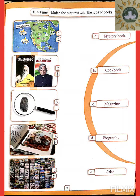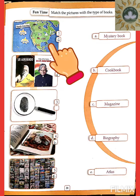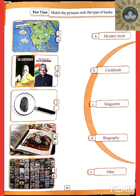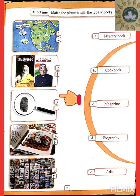Now children, we move on to page number 31, Fun Time — match the pictures with the type of books. The first one on your left hand side has maps, so these are basically information about different countries, their political and physical features. Next you have Shri Aurobindo and Dr. A.P.J. Abdul Kalam — these are biographies, books about their life stories. Next you can see a fingerprint, thumb print, and a mirror, along with a stethoscope — this is an investigation-based story.